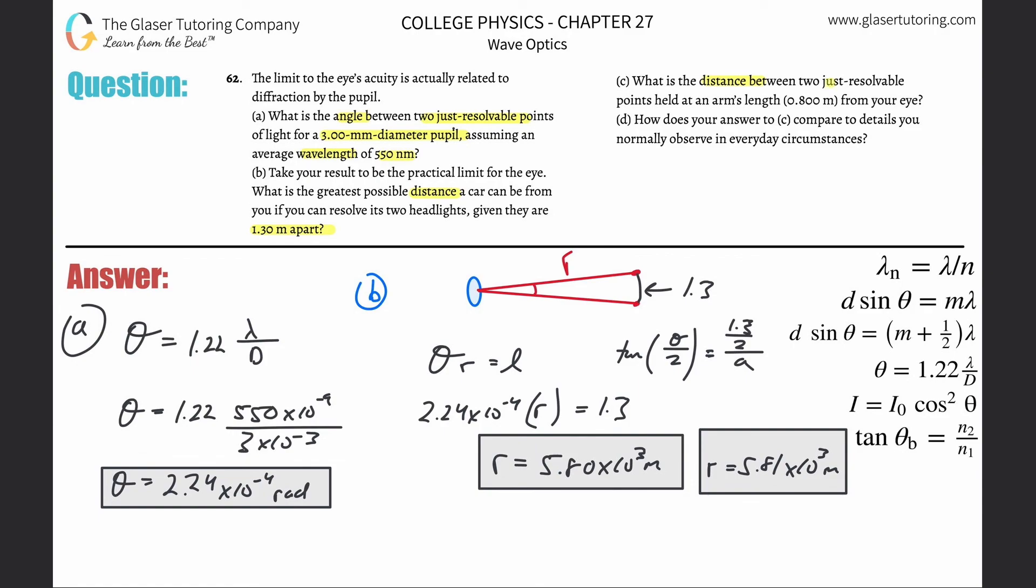Let us see. What is the distance between two just resolvable points held at an arm's length of 0.8 meters from your eye? So basically, we're going to use this exact same formula as we did before. Theta R is equal to L. The L represented the distance between the points. So the theta here was 2.24 times 10 to the minus 4th. And the R now, the distance from the body is 0.8 meters. Solve that for L. Just throw that on into the calculator. 2.24 times 10 to the minus 4th divided by 0.8. And what do we get? We get a value of now the distance between those two points being 1.79 times 10 to the minus 4th. And that's in terms of meters. So obviously, that's 0.179 millimeters. That takes care of that.